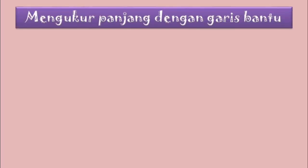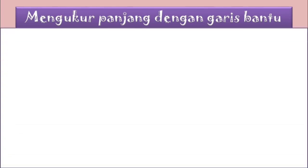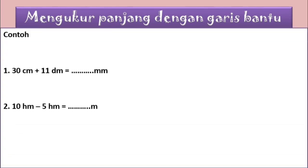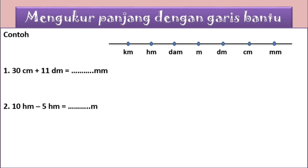Mengukur panjang dengan garis bantu. Berikut ada dua contoh soal. Langkah pertama adalah kita membuat garis bantunya terlebih dahulu, kemudian kita berikan satuan-satuan panjangnya: kilometer, hektometer, dekameter, meter, desimeter, sentimeter, dan milimeter. Untuk contoh soal yang pertama: 30 cm ditambah 11 desimeter sama dengan berapa milimeter?